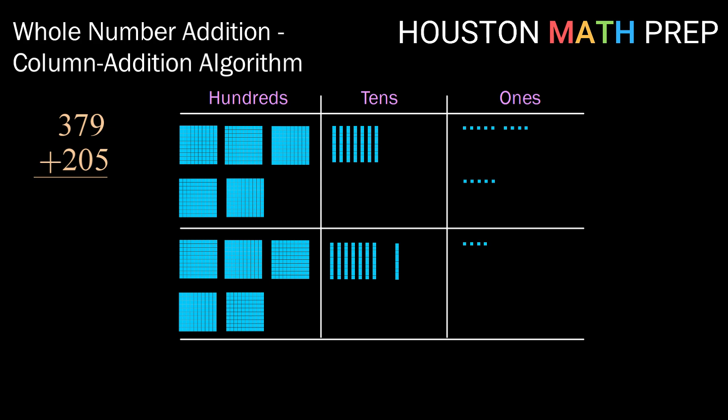Now that I'm done with all of my regrouping I go ahead and grab my digits. So in the ones column I have 4. In the tens column I have 8. And in the hundreds column I have 5. So my result for my addition is 584.